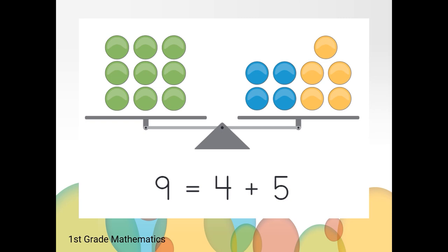We know four plus five is nine because four and four equals eight, and five is one more than four. So one more than eight is nine. Nine equals four plus five.